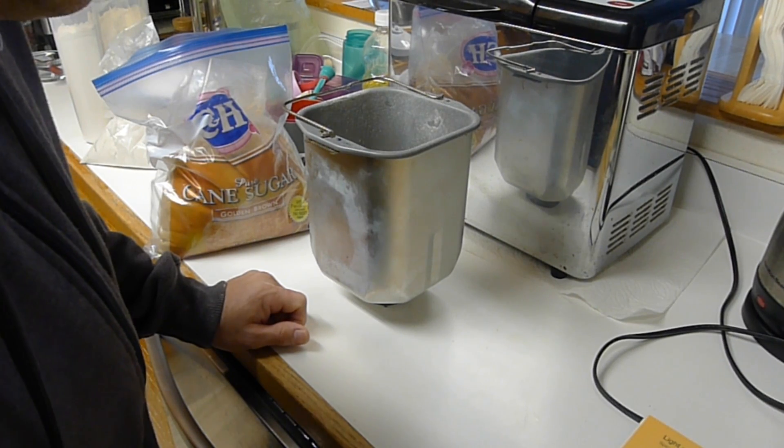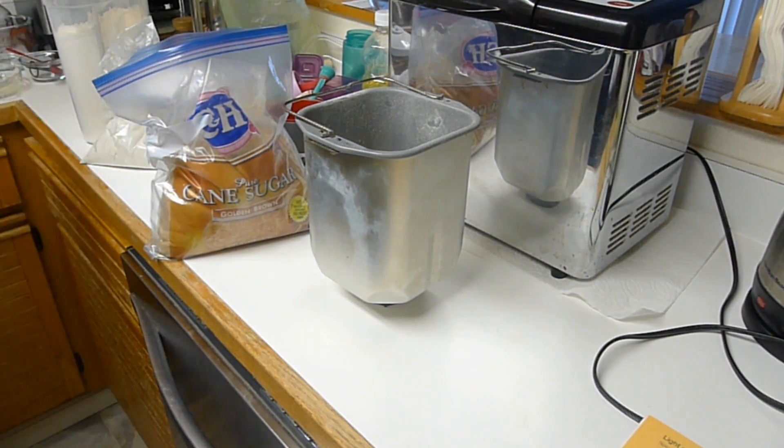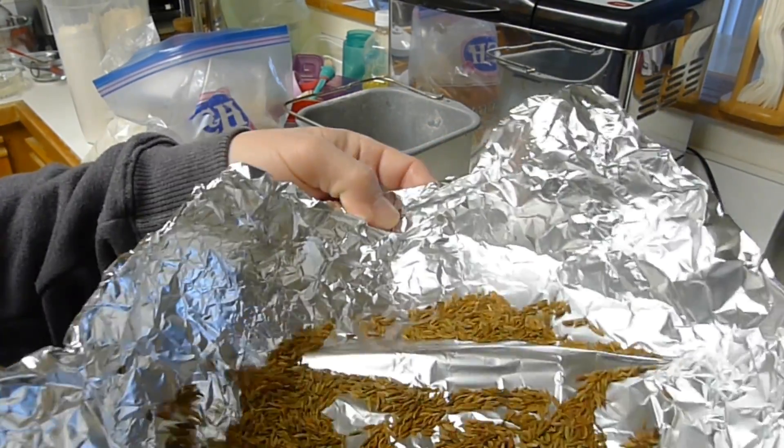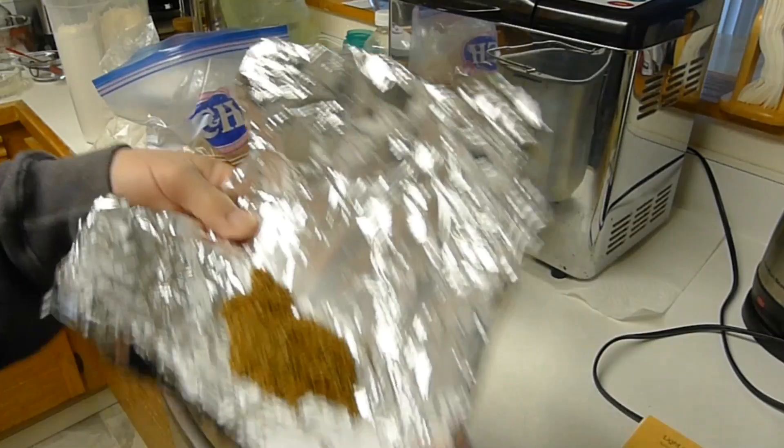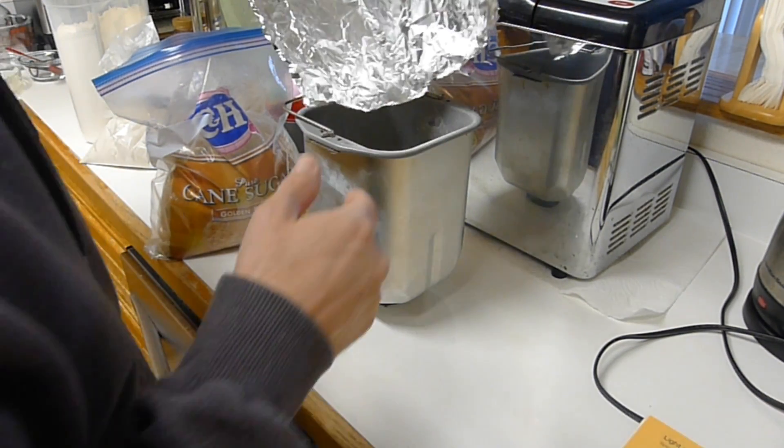Let's see, one tablespoon cumin seeds toasted, so I already did that. So I toasted some cumin. The first batch I over-toasted and they looked a little dark, so I went ahead and redid it. So we'll try to sprinkle that over. That should get well incorporated.